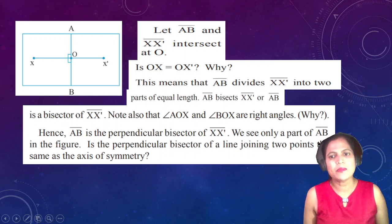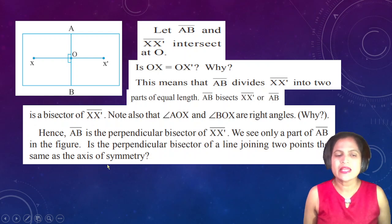We see only a part of AB in the figure. Is the perpendicular bisector of the line joining two points the same as the axis of symmetry? Yes, it is the same. It is an axis of symmetry here, AB, but in a different way we found this. I will show you how.